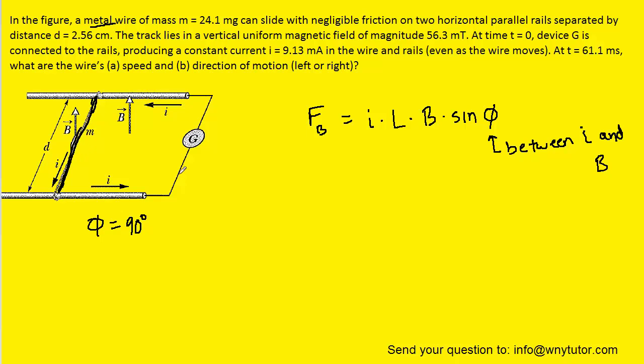That is the only force acting on the wire, and we know from Newton's second law that the net force acting on an object is equal to its mass times its acceleration. So we can substitute in Ma for the magnetic force. We also know from kinematics that the acceleration is equal to the change in velocity divided by the time.